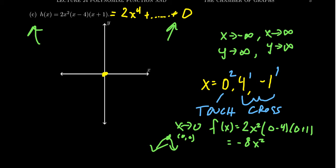We're going to go through the origin at x equals 0. We have an x-intercept at 4, and we also have an x-intercept at negative 1. Since we have a downward-facing parabola at the origin, let's do the left-hand side first. The parabola points down at the origin, but we have an x-intercept to hit at negative 1. So somewhere between 0 and negative 1, it's going to come back up to x equals negative 1. At negative 1, it's going to cross and go to the other side, then go up to match the end behavior on the left.